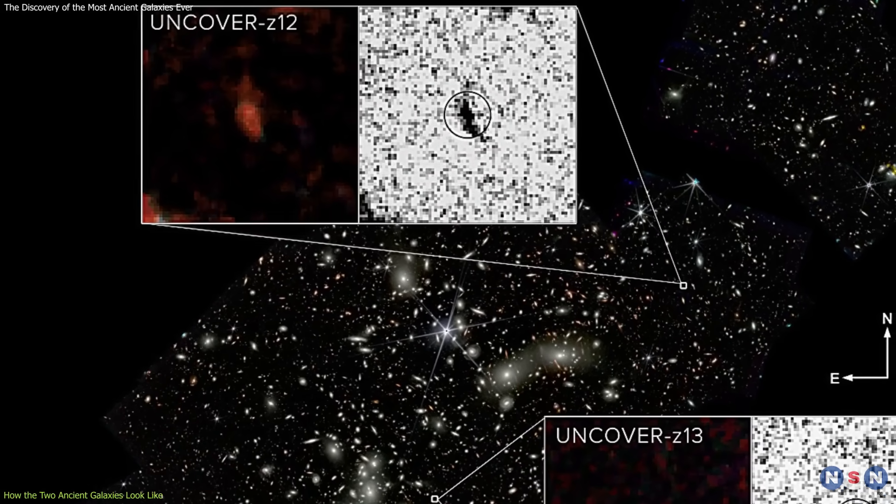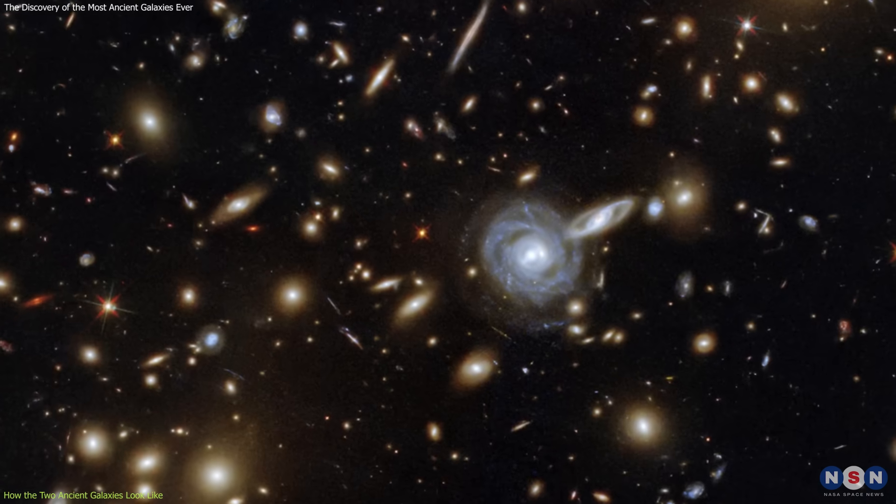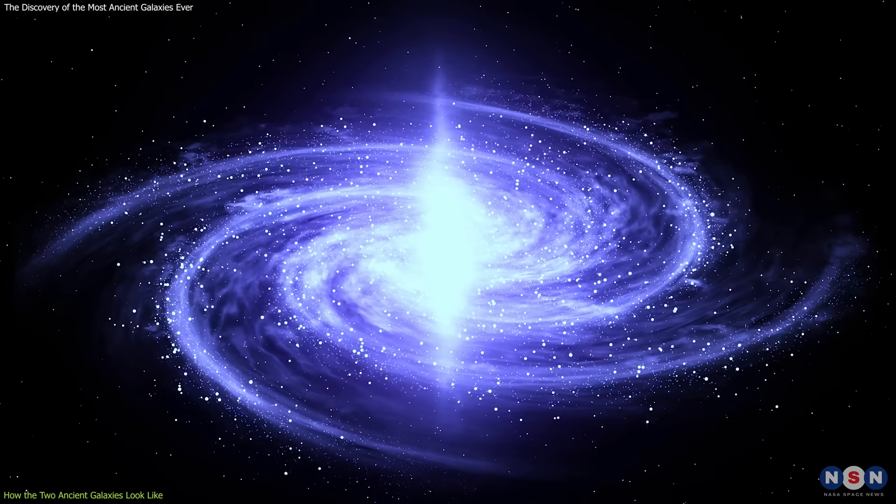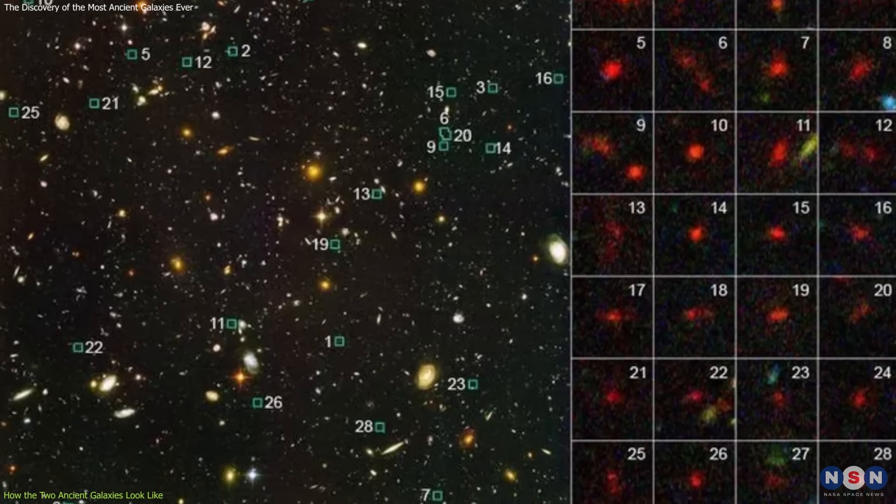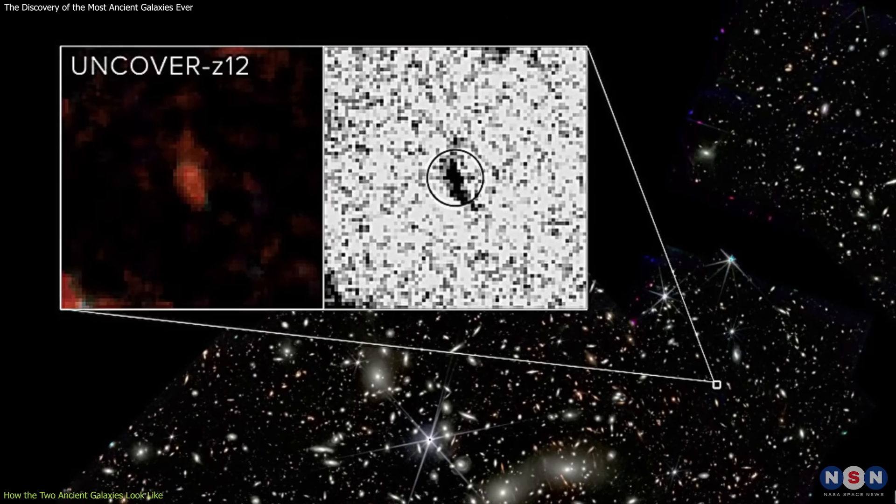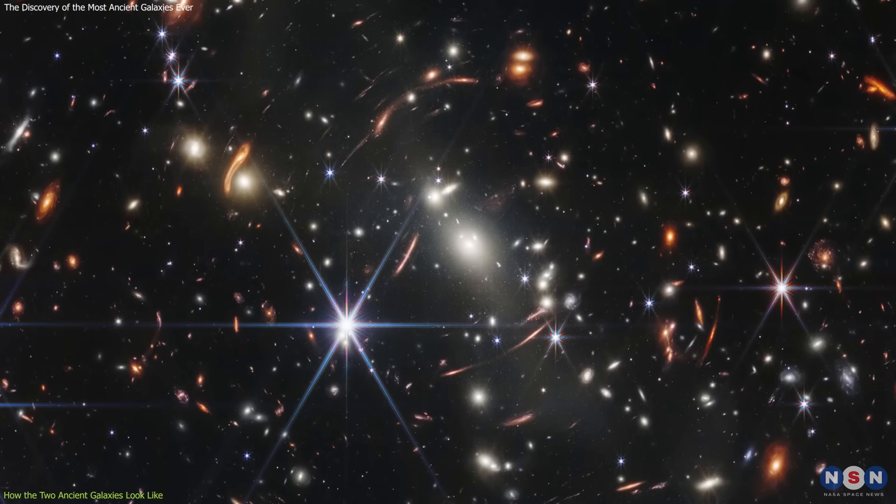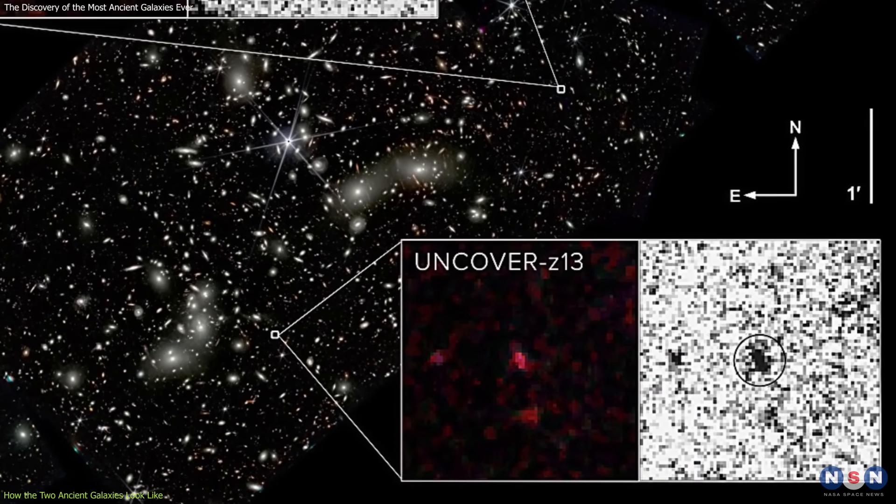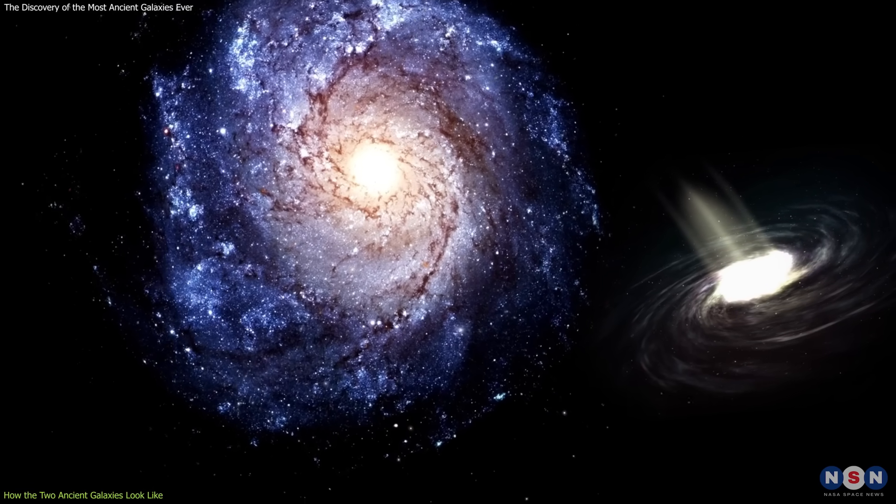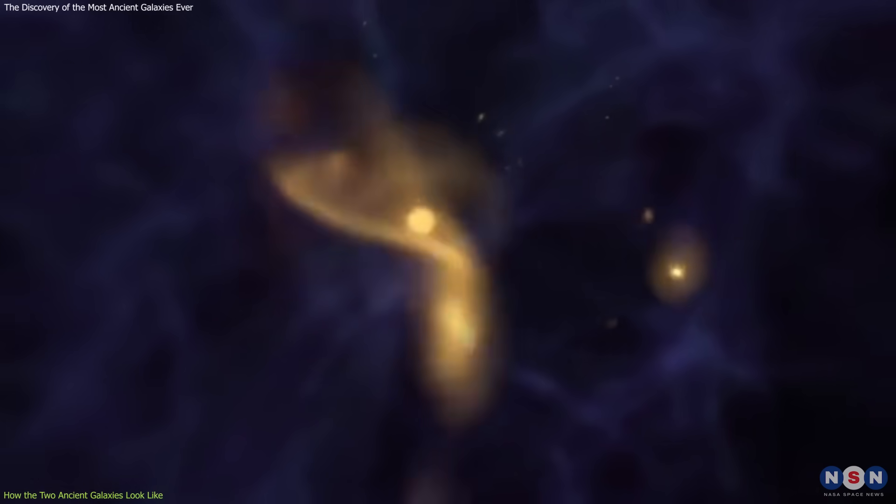The two galaxies are very different from each other, but also from other known distant galaxies, and from the galaxies in the present-day universe. Most of the distant galaxies that have been observed so far are small, bright, blue, and star-forming, similar to Uncover Z12, but not as extreme. The galaxies in the present-day universe are large, faint, red, and quiescent, similar to Uncover Z13, but not as ancient. The two galaxies are therefore unique and interesting for astronomers, as they offer insights into how the earliest galaxies might have formed and interacted in the universe.